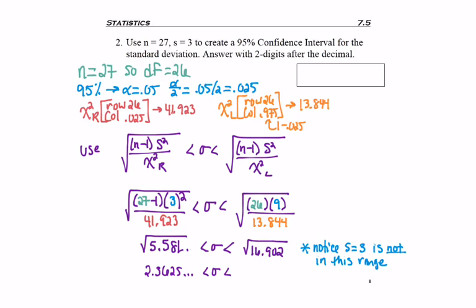So then I take my square roots, and once I do that, sure enough, s, my sample standard deviation, is in the range, so I can go ahead and provide my answers with two-digit decimal values. 2.36 to 4.11, the standard deviation is somewhere in there.